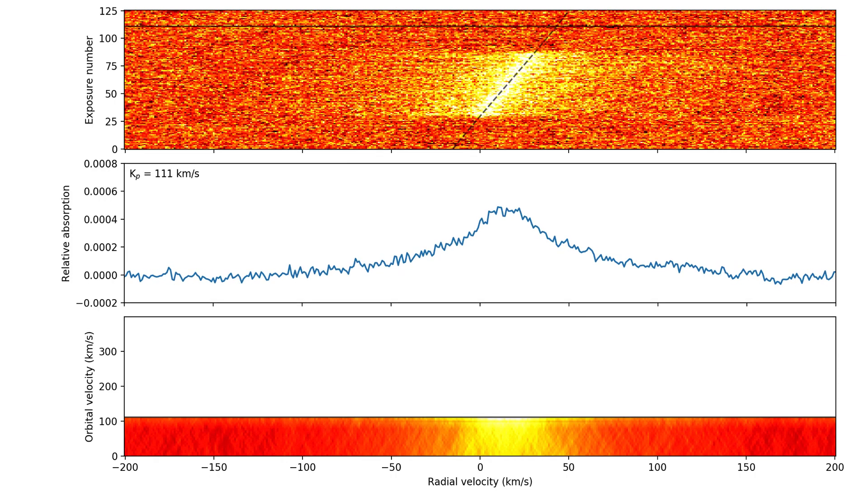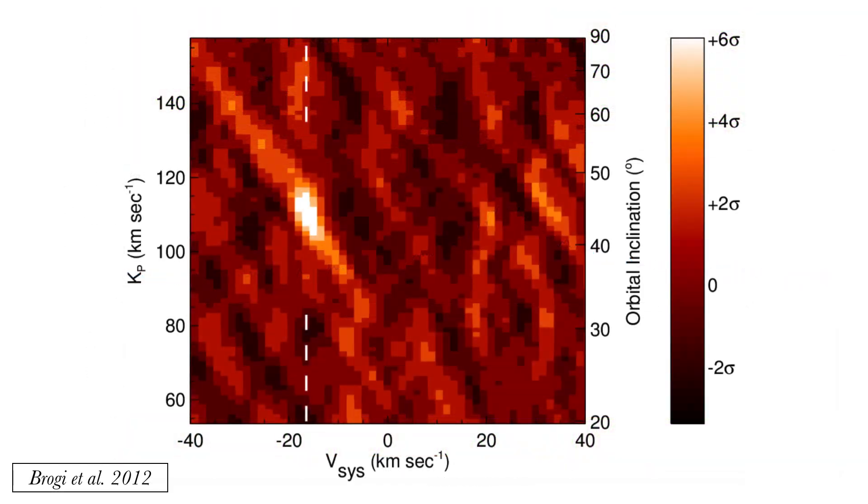This concept was first applied by Matteo Broggi in 2012 to determine the orbital velocity and hence the inclination of the non-transiting planet Tau-Boötis b using carbon monoxide absorption lines in its day-side emission spectrum. This is a cross-correlation function of a single cross-correlation template designed to detect a single species, in this case carbon monoxide.